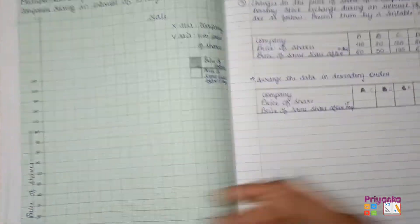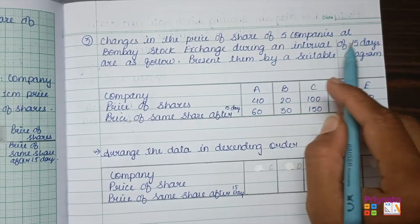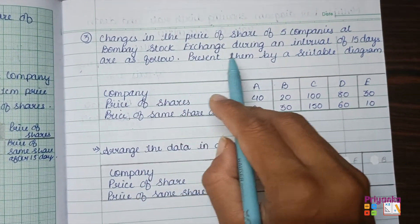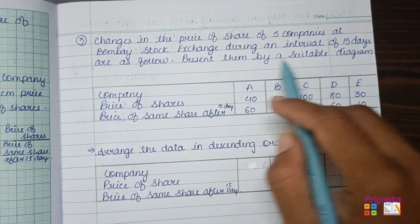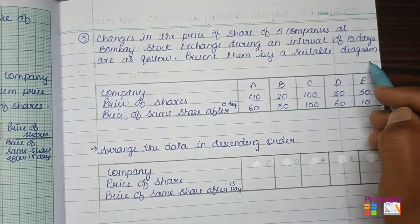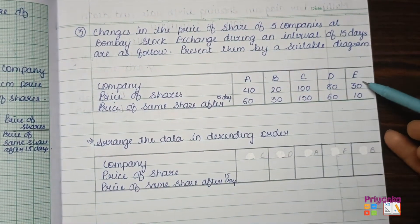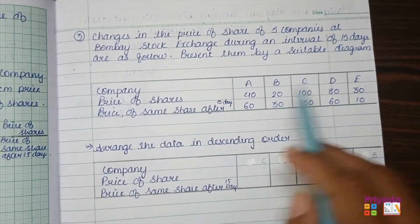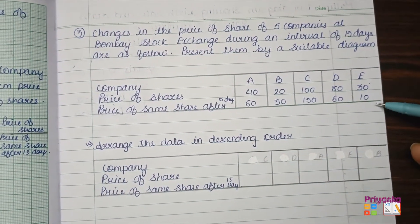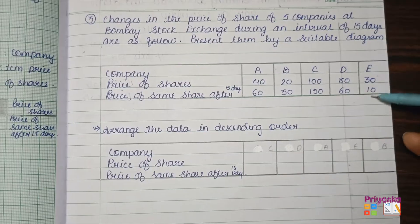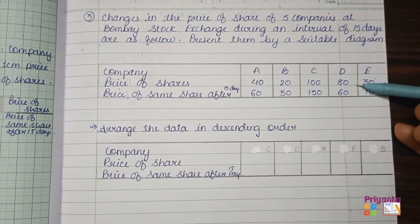Question number three: change in the price of shares of five companies at Bombay Stock Exchange during an interval of 15 days — present them by a suitable diagram. The information given includes five companies, the price of a share, and the price of the same share after 15 days. Since two pieces of information are given for one company, we are going to draw a multiple bar diagram.